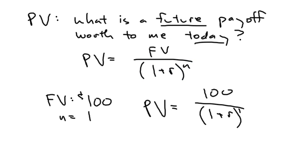So once again, if I know how much money you're offering me in the future, how many years I have to wait for it, and what the interest rate is, then I can calculate the present value. PV is equal to FV divided by (1+r) to the n.